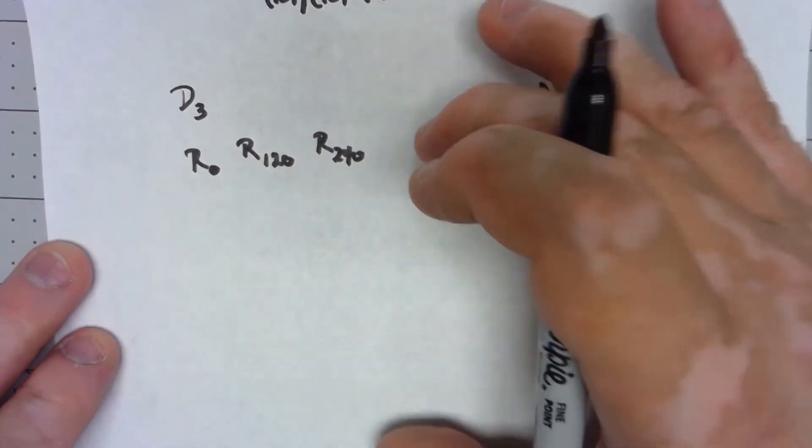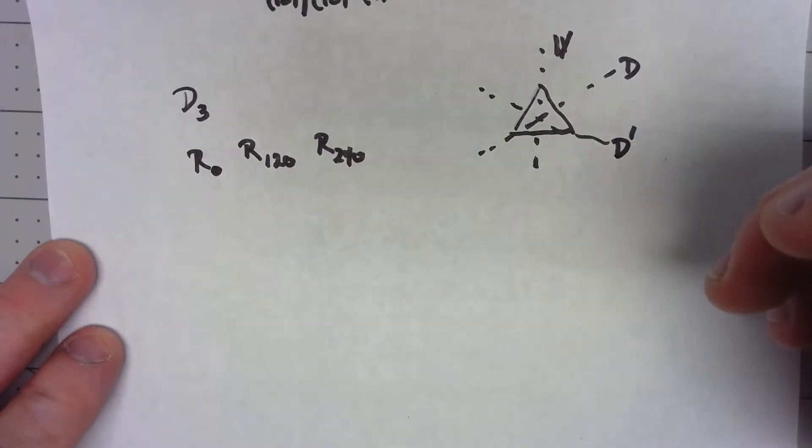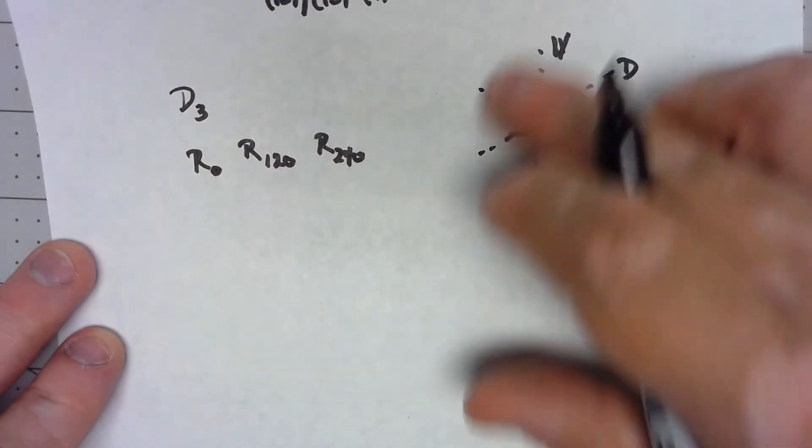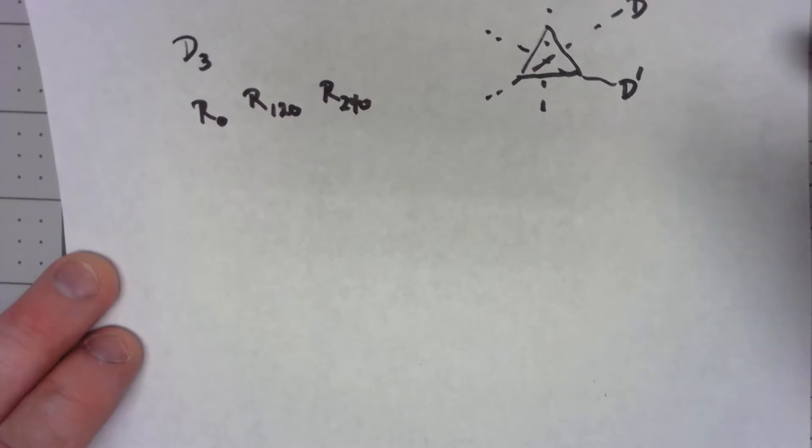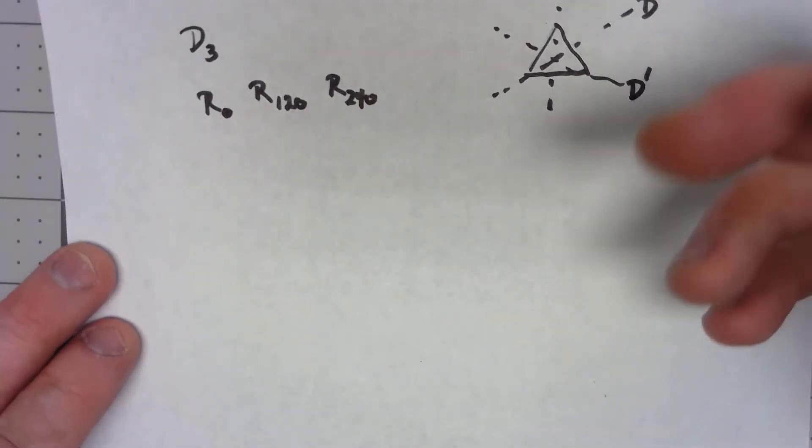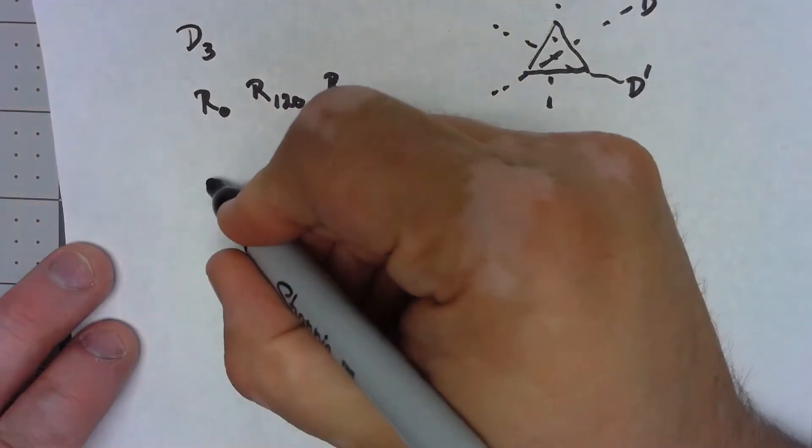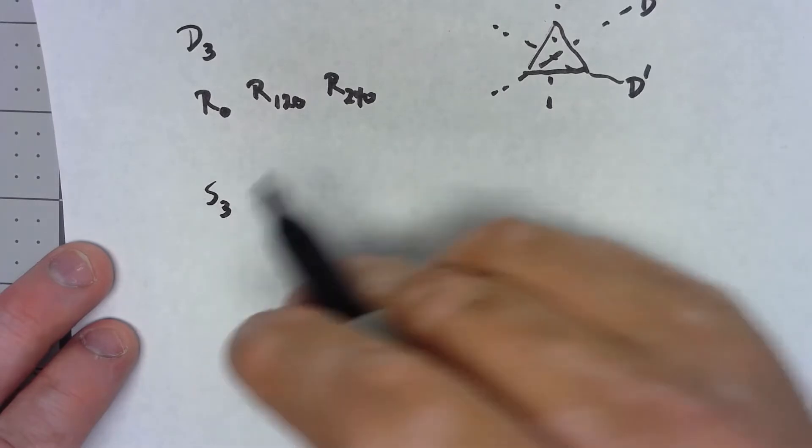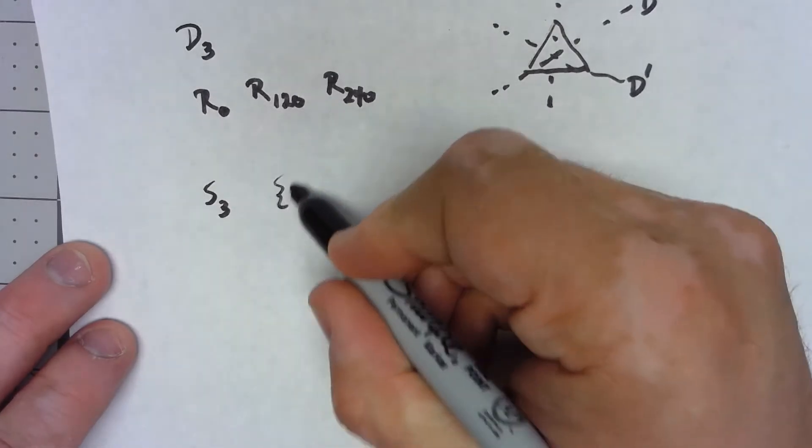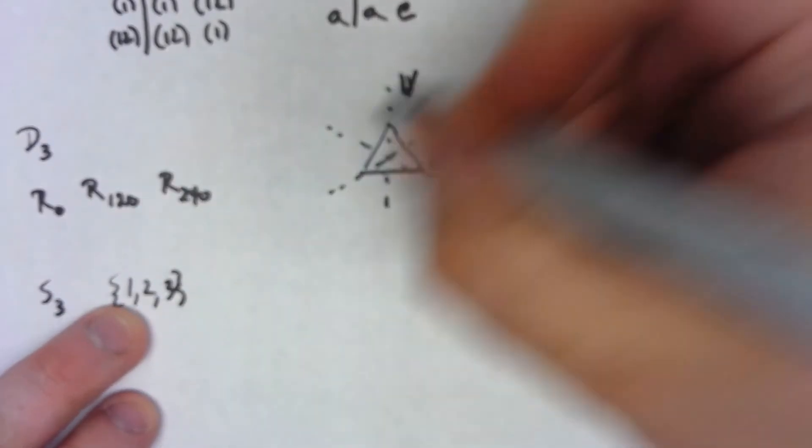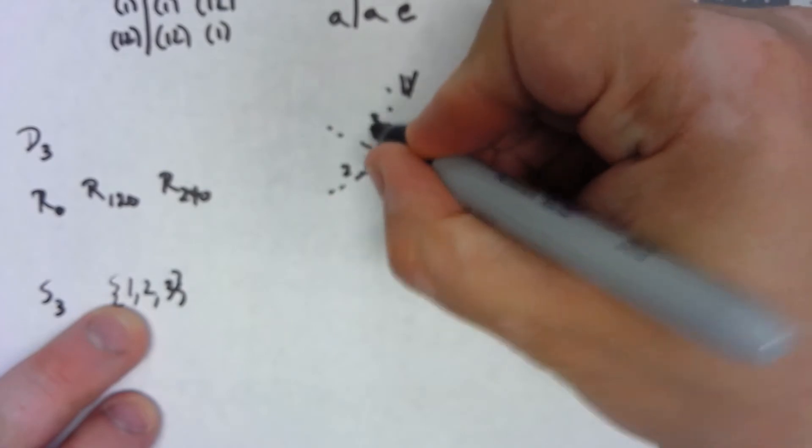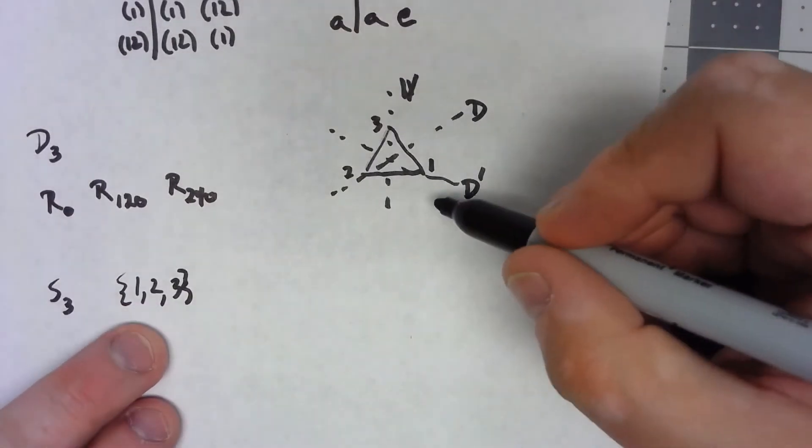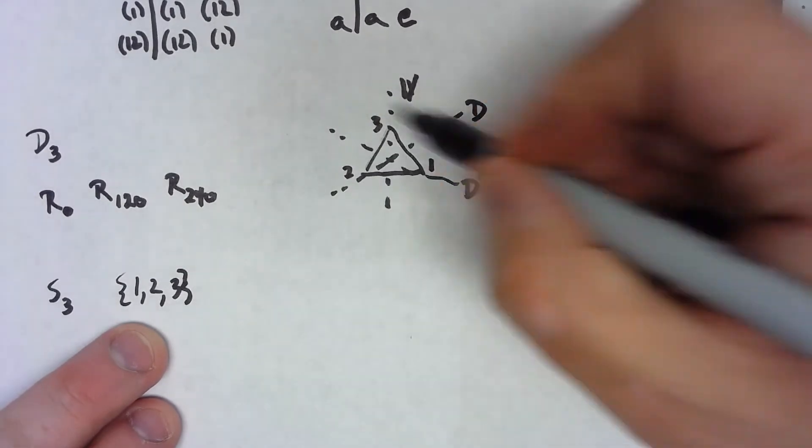I'm not going to go through and create the entire Cayley table for this—you've actually already done it in the homework—but it's worth thinking about that that right there is effectively, again I'll use the real term, isomorphic to S3. S3, once again, is the number of permutations on the set {1, 2, 3}. And what I can think about is for the triangle, if I label 1, 2, 3, then those things get moved around by the different operations.